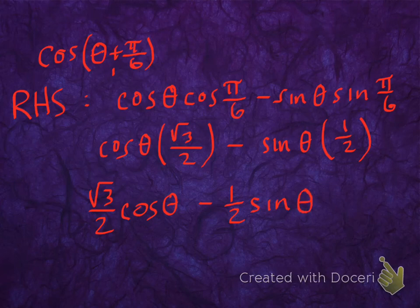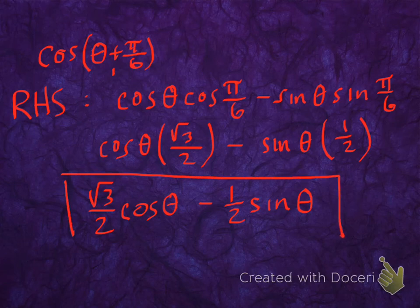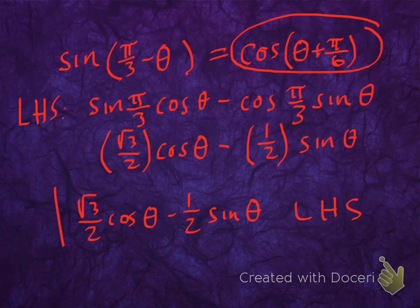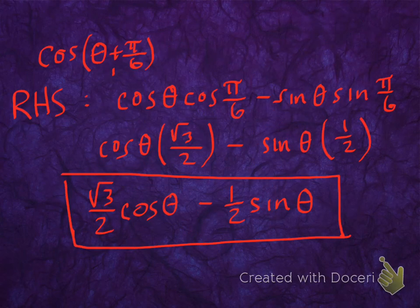This is the right-hand side of the equation. The left-hand side was root 3 over 2 cosine theta minus 1 half sine theta, and the right-hand side is root 3 over 2 cosine theta minus 1 half sine theta. They're the same.